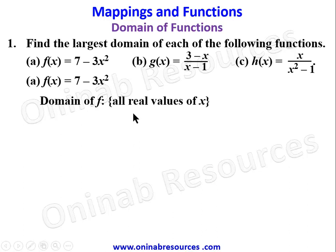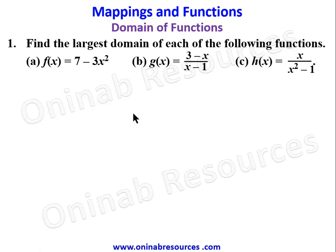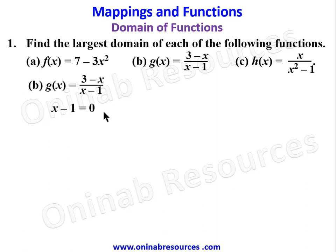We go to part b of the problem. This is a function with a denominator, so the method of finding the domain of this type of function — where the denominator is not a radical — is to equate the denominator to zero. The value of x we obtain will be exempted from the domain of the function. So we say x - 1 = 0.